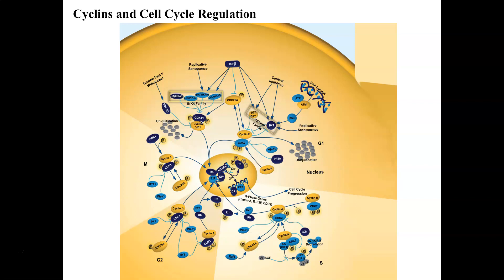You'll also notice on this diagram other proteins and mechanisms depicted, including some blocking lines. There are proteins like p53 and p21 associated with inhibition — there are mechanisms that are going to slow down the cell cycle or shut it off completely. You'll also notice that cyclins interact with a process called ubiquitination, which is a physiological process for breaking down proteins within the cell.